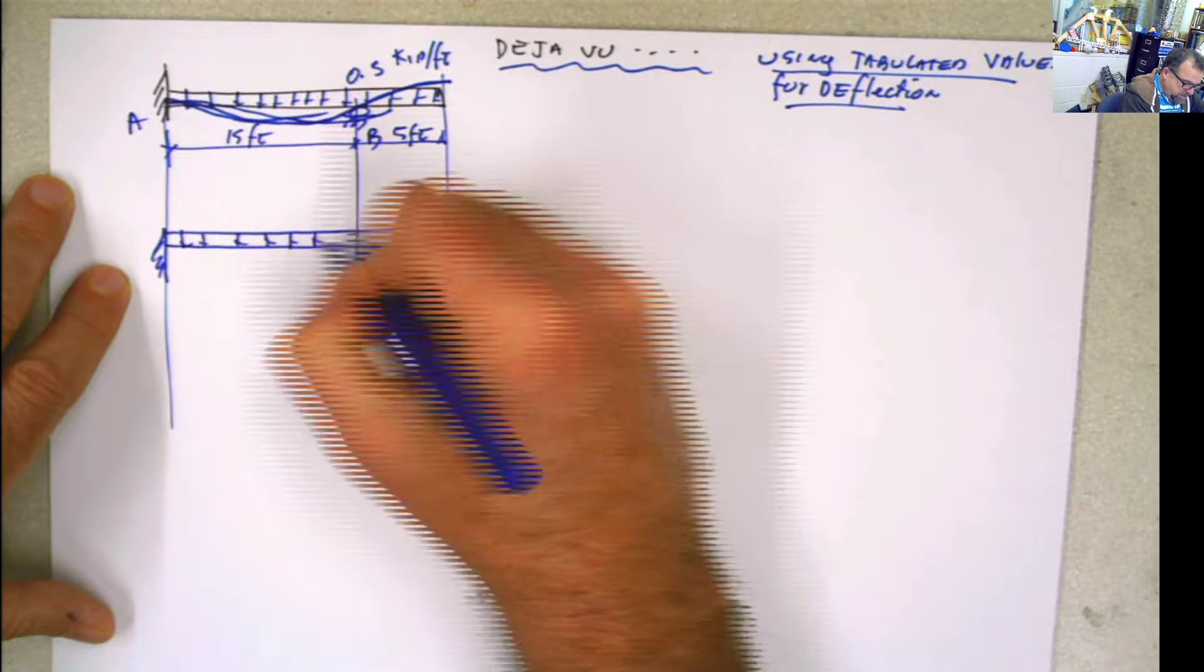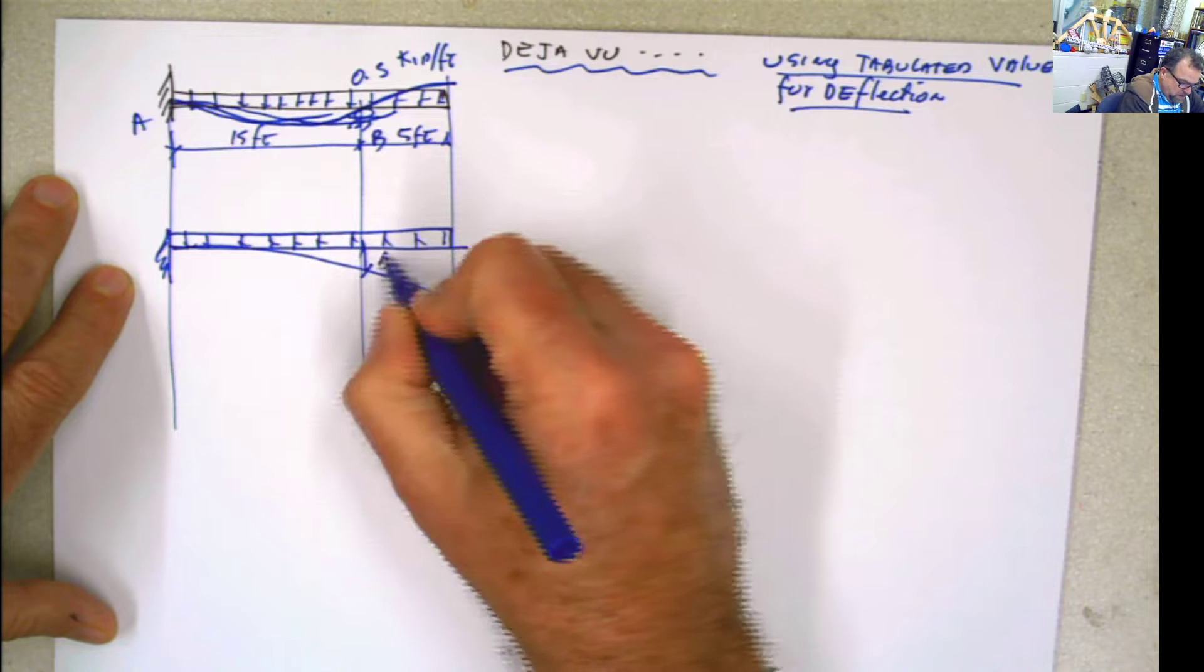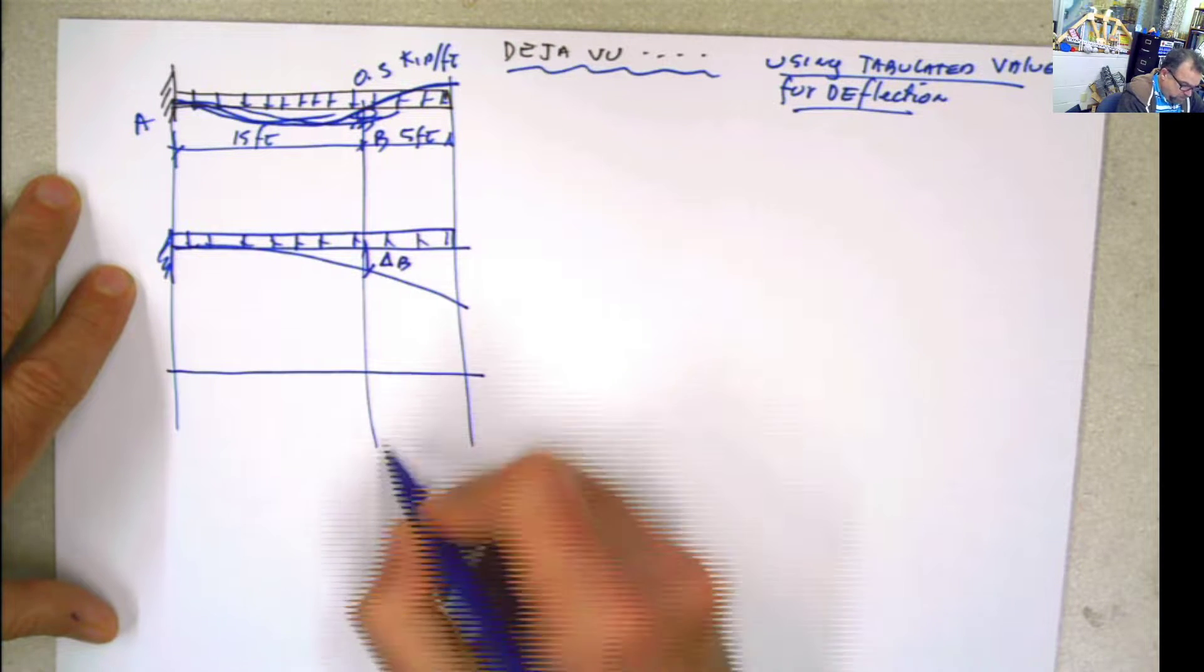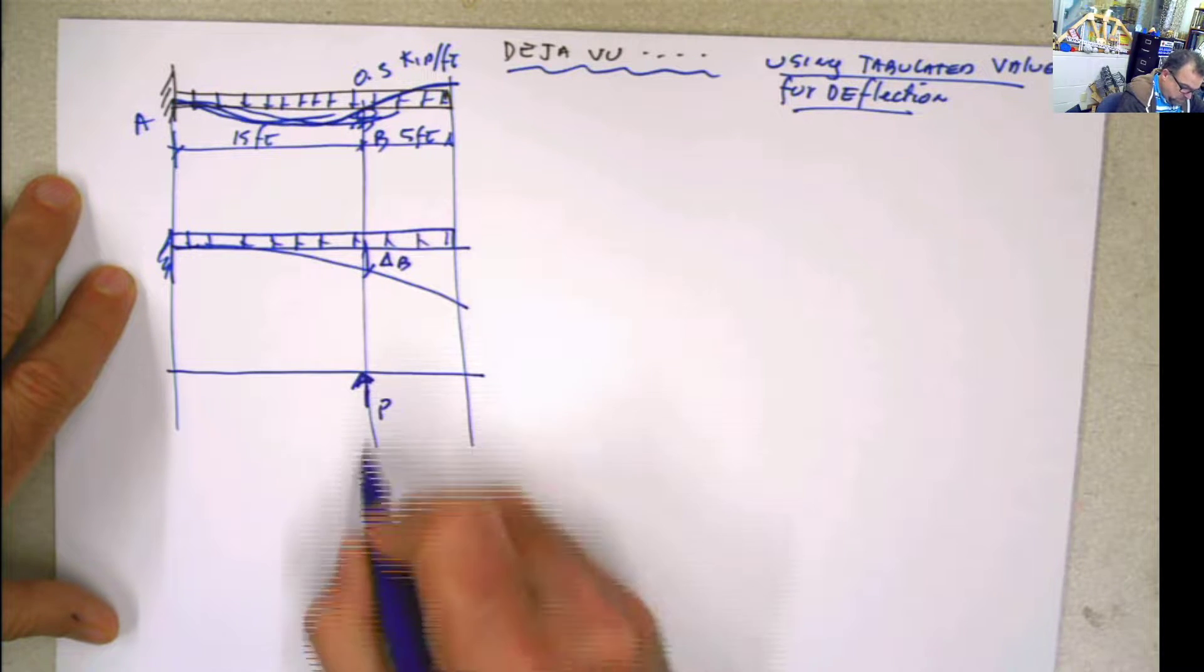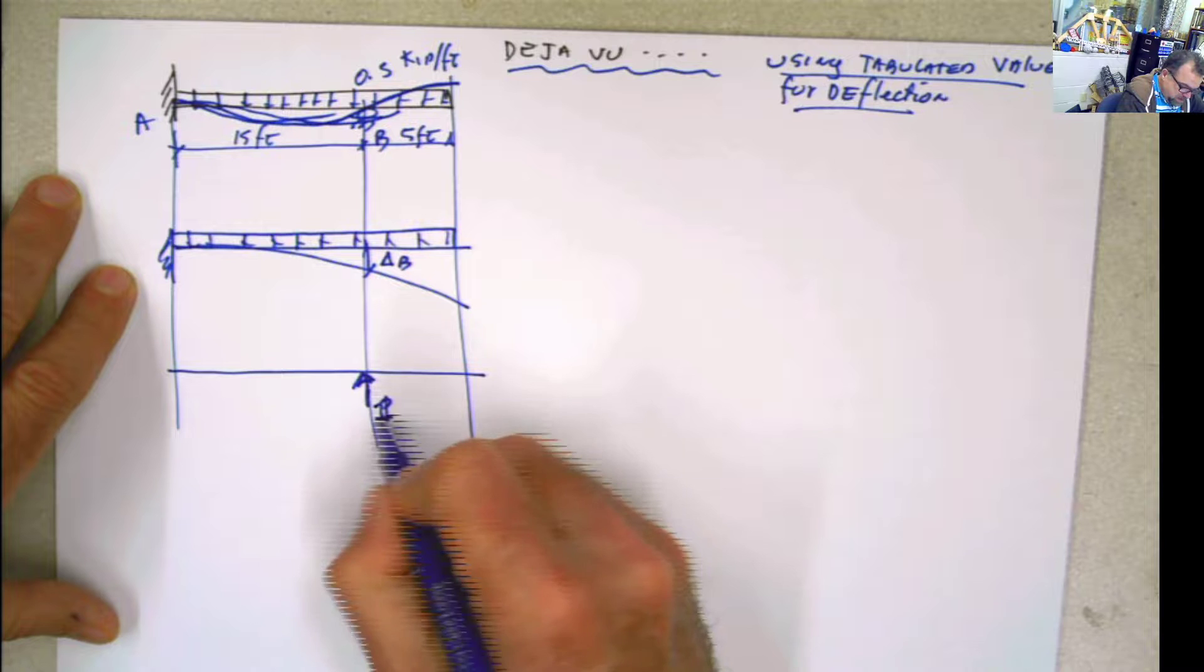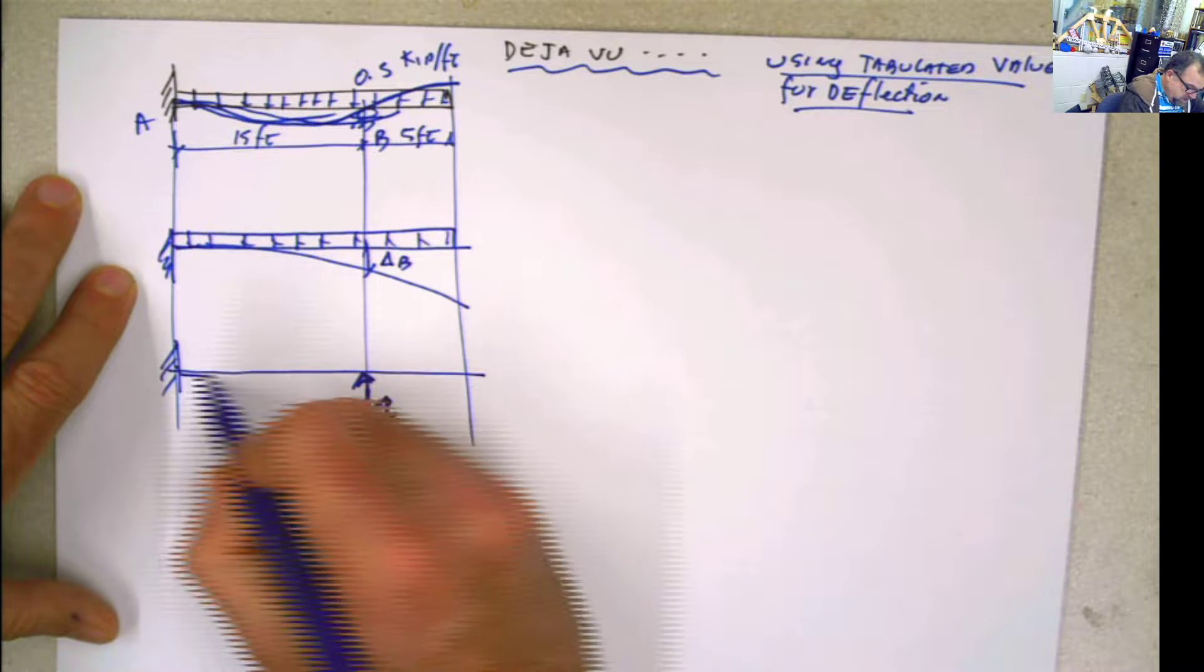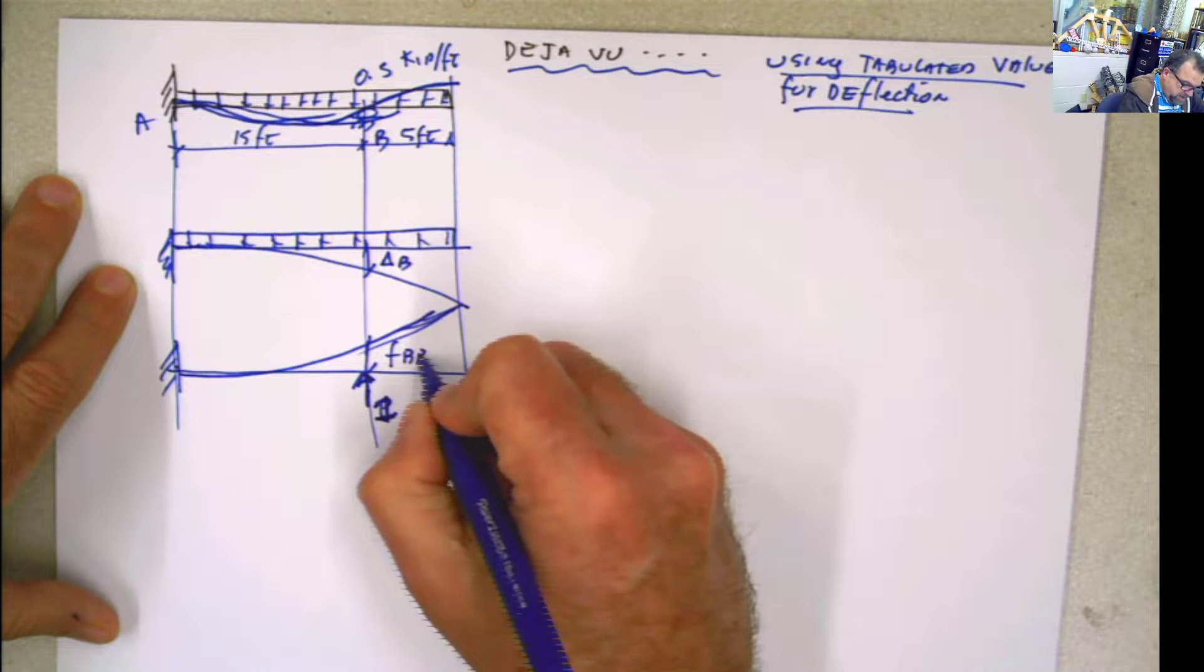So basically, if I have this one here, this is going to happen. And this is going to be called delta b. And then when I push this up, this is going to be my force P pushing it up. In my case, it's going to be a force of 1. And because this is fixed here, it's going to do something like that. And we call this fbb.